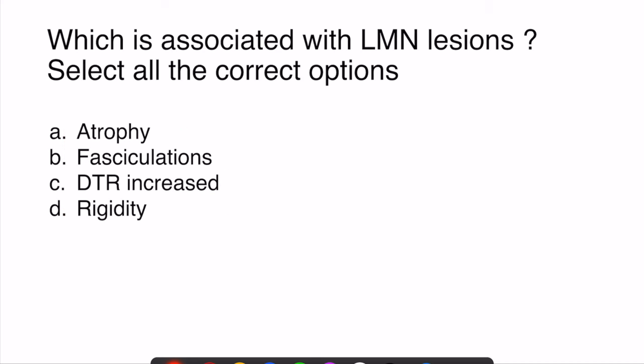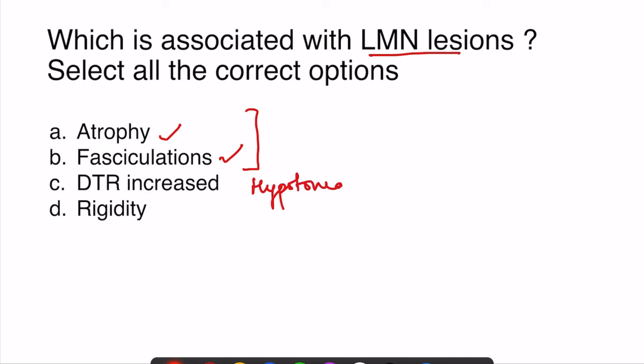For the question on lower motor neuron (LMN) lesions, the answer is atrophy and fasciculations. Other features of LMN lesions include hypotonia (decrease in tone), decreased deep tendon reflexes, and absence of the Babinski sign — Babinski sign is present in upper motor neuron lesions. Only the muscle groups supplied by the affected segment are involved in LMN lesions.